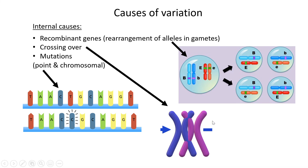The third internal cause is mutations — you get different types: point mutations and chromosomal mutations. In this example, a point mutation is shown where the original sequence had thymine, but after replication a cytosine appears in its place. Mutations are random, and these are the three different internal things that cause variation.